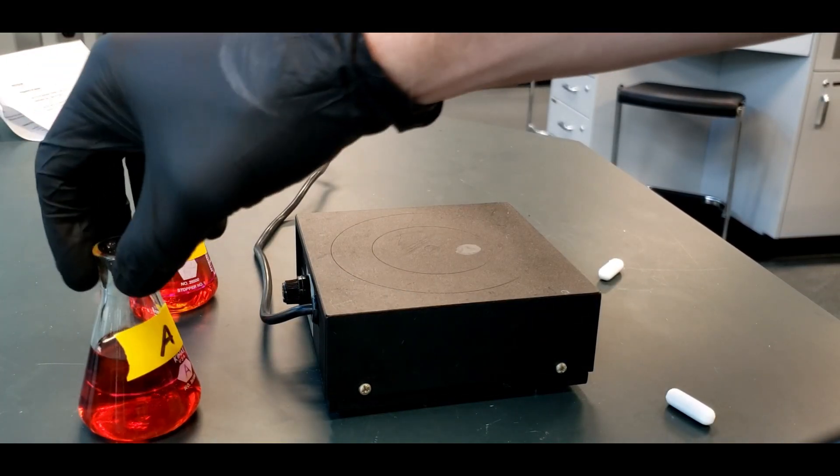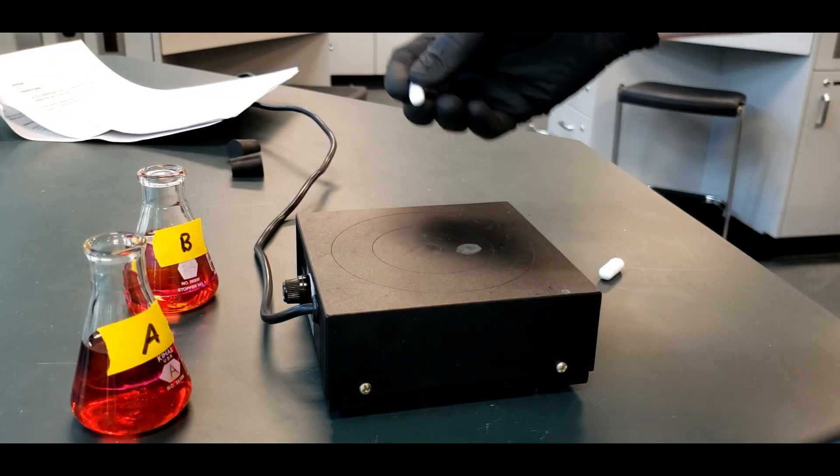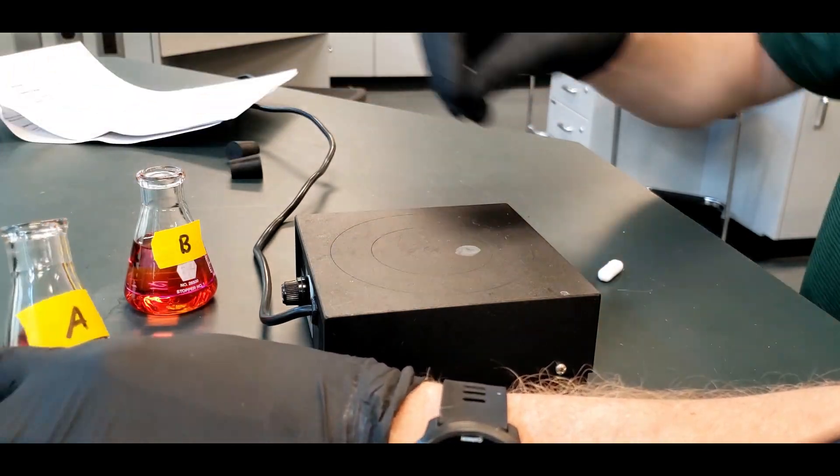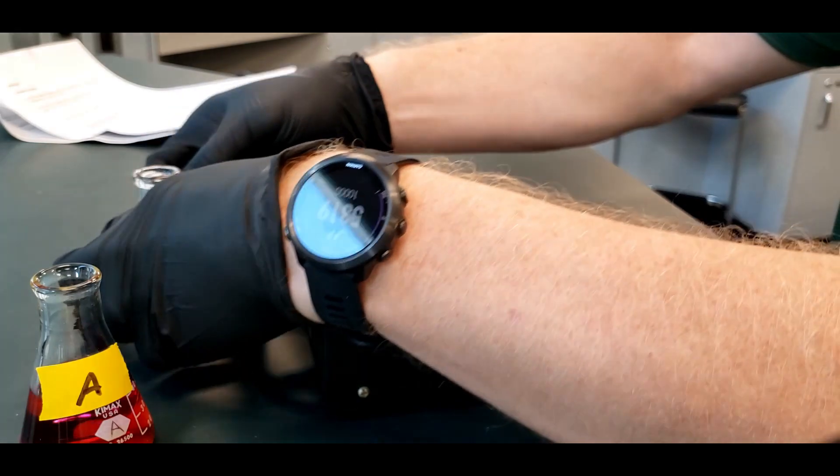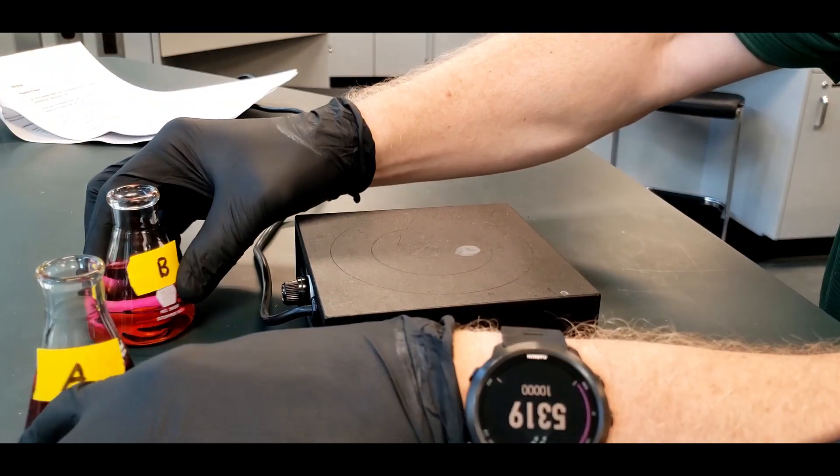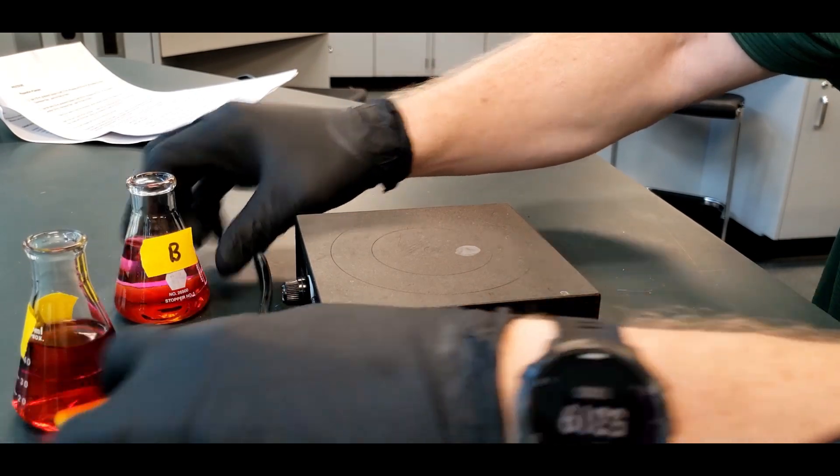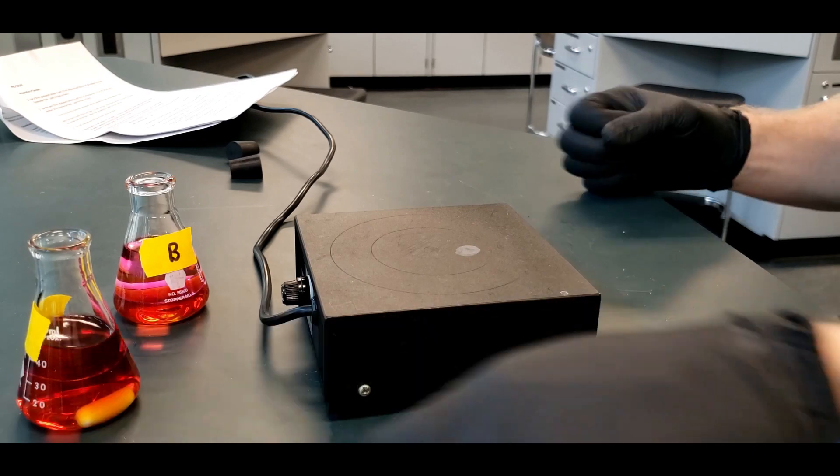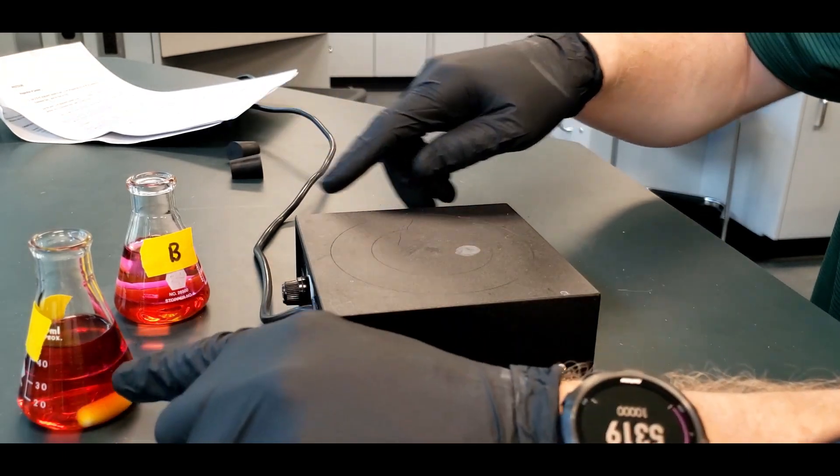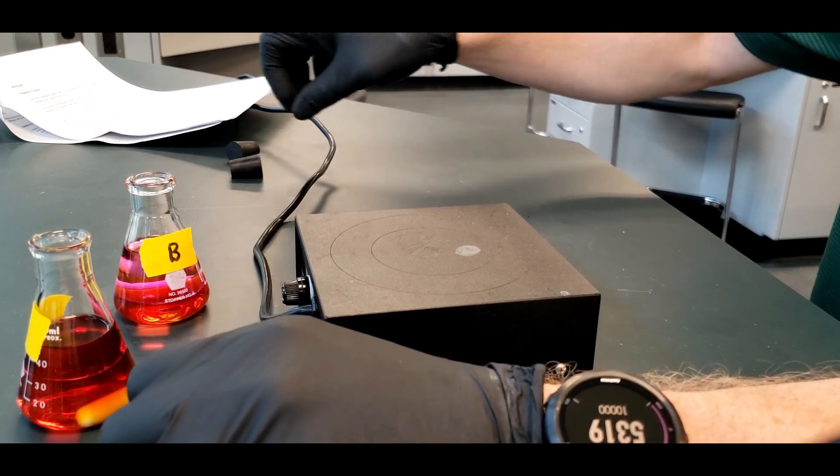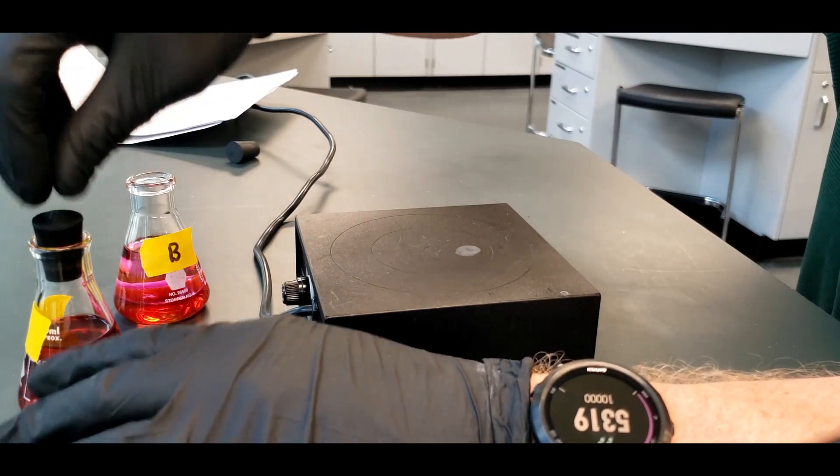So the next step, we're going to put in the stir bars into each. I'm going to slide those down the side. Probably wouldn't break the glass, but it would definitely cause some splashing. Because these volumes are pretty high. And I'm wearing gloves because of the iodine mainly. Hexane is not good for you either, but the iodine definitely will stain. That's why I have gloves today.